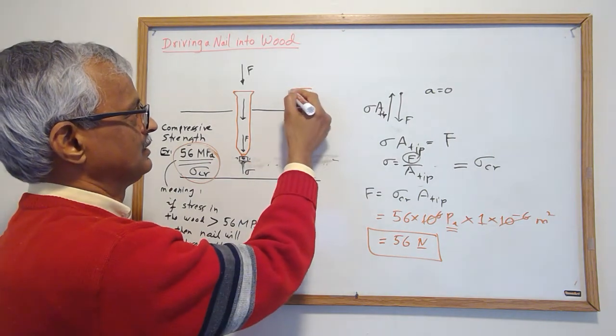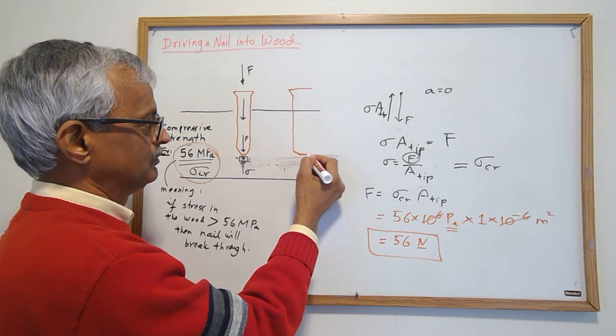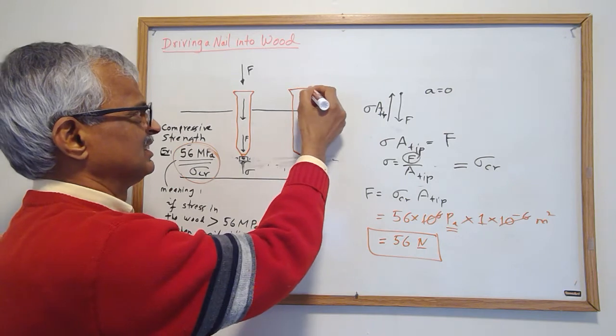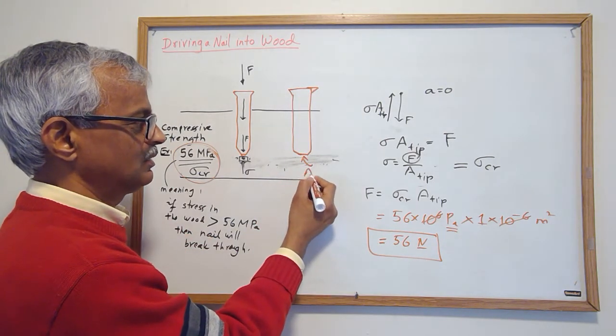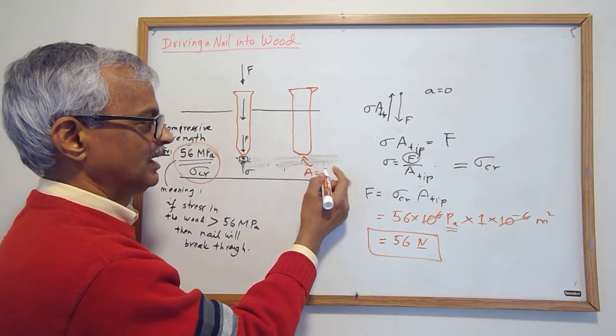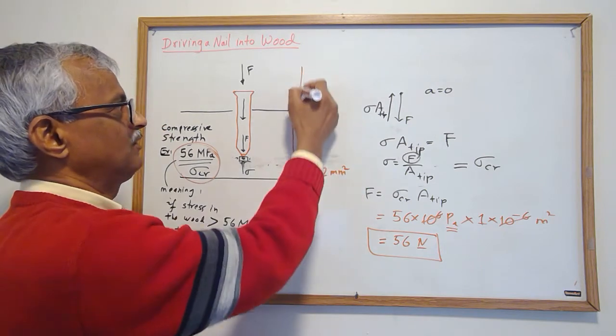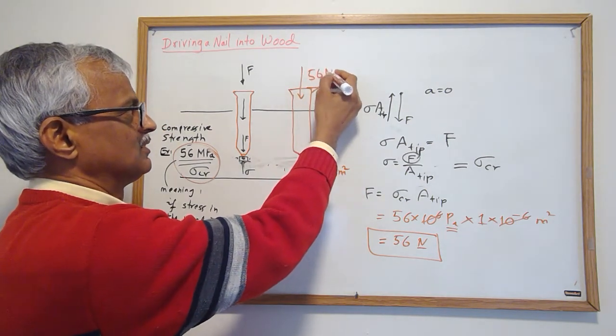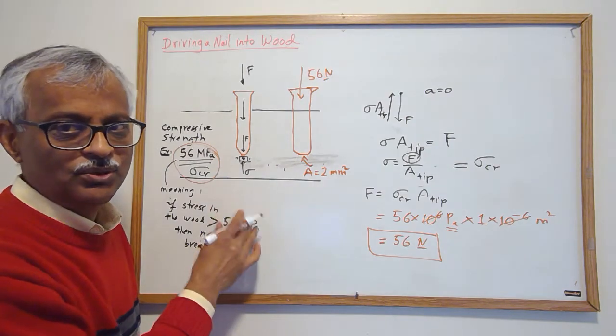For instance, if you had another nail, but you applied 56 newtons and the area was, say, two millimeters square, and you applied 56 newtons, can you drive it in this wood? No.